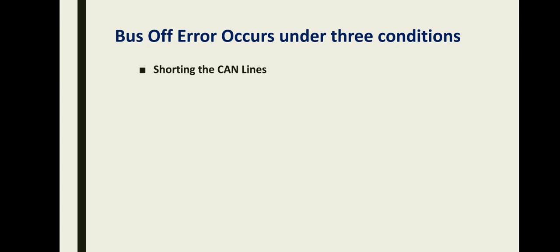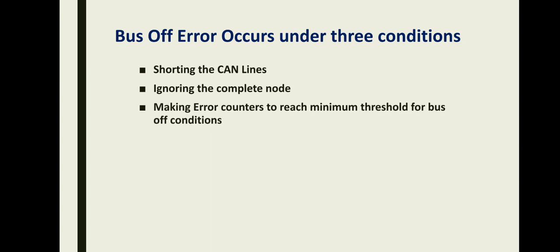The bus off error occurs under these three conditions: one, shorting the CAN lines; two, ignoring the complete node; three, making error counters reach the minimum threshold for the bus off condition. Let's see one by one how each works.